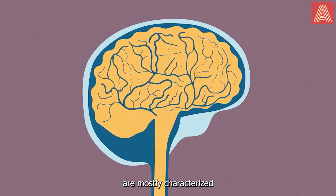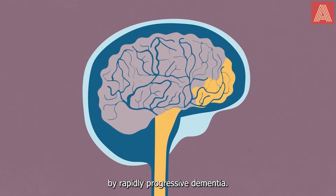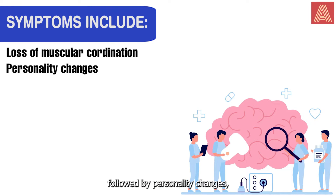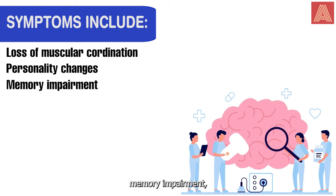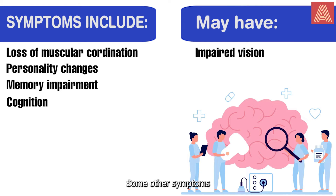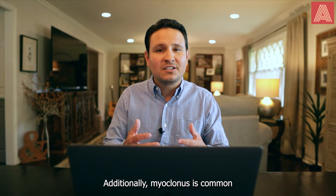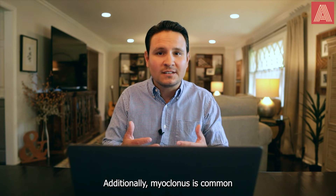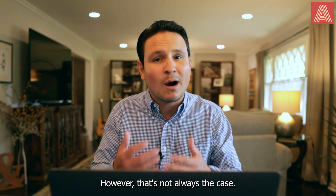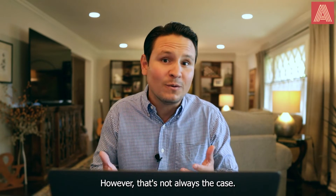Clinical symptoms of CJD are mostly characterized by rapidly progressive dementia. The first being a loss of muscular coordination, followed by personality changes, memory impairment, cognition, and may be accompanied by impaired vision. Some other symptoms include insomnia and depression. Additionally, myoclonus is common and may also be time-locked with periodic discharges on an EEG. However, that's not always the case.